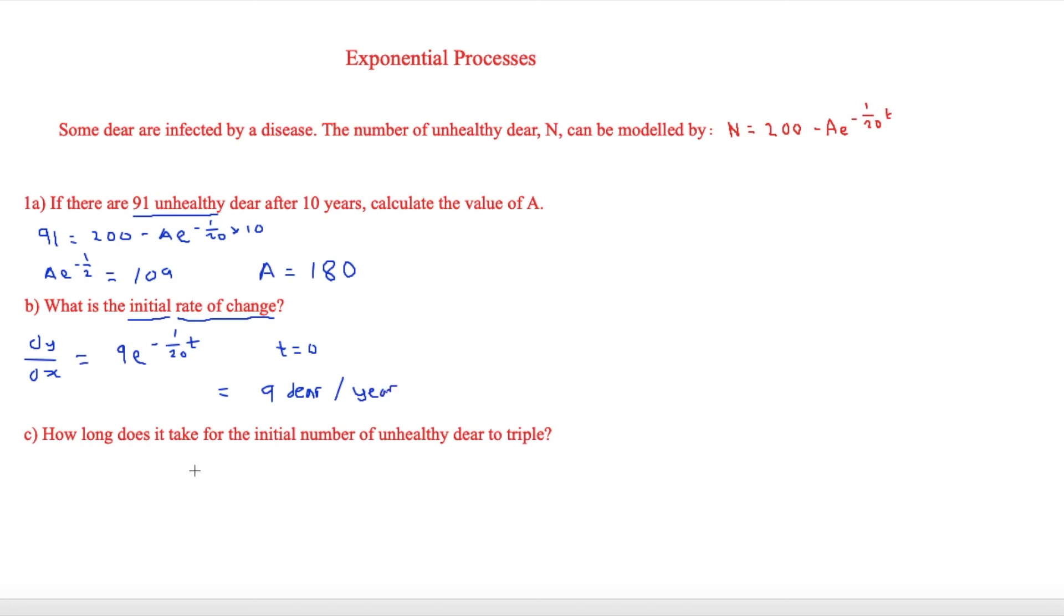The final question is how long does it take for the initial number of unhealthy deer to triple. First of all, we need to find out what the initial number is. For that, we're just going to plug in t equals 0. That would mean n is going to be 200 minus 180, and anything to the power of 0 equals 1, so that's going to be equal to 20. For that to triple, we'll need 60. So therefore our number will be 60.